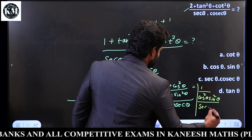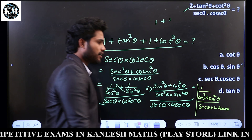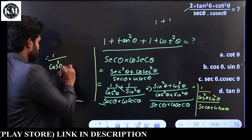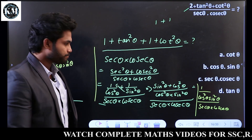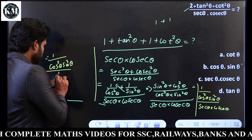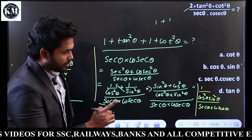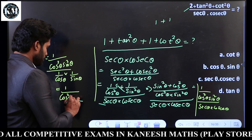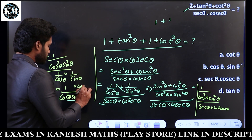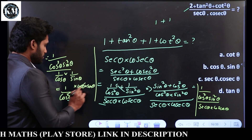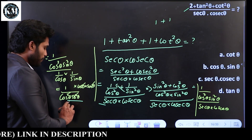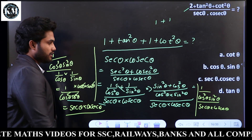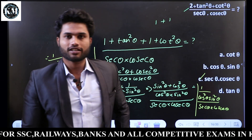This gives us sec theta cosec theta. Now it's easy to solve. In sec theta, 1 by cos theta; in cosec theta, 1 by sin theta. So the answer is sec theta cosec theta. That is our answer — the CGL question gives us a nice clean answer.